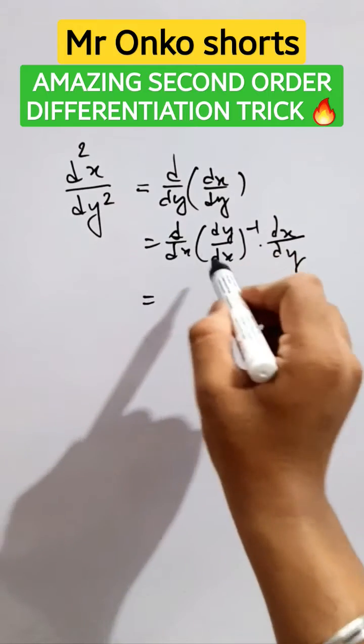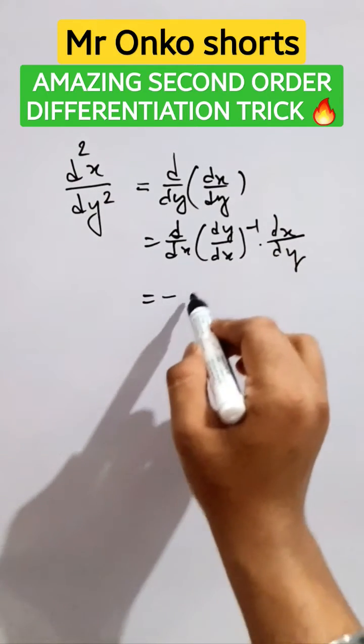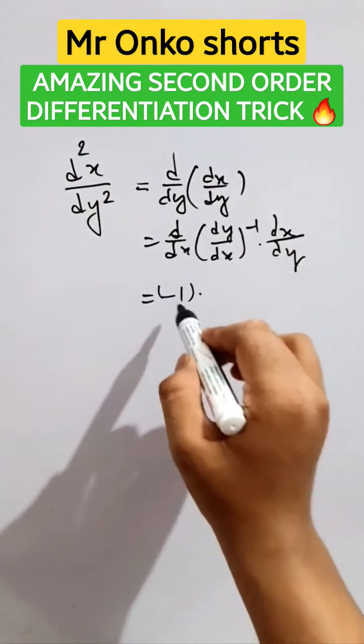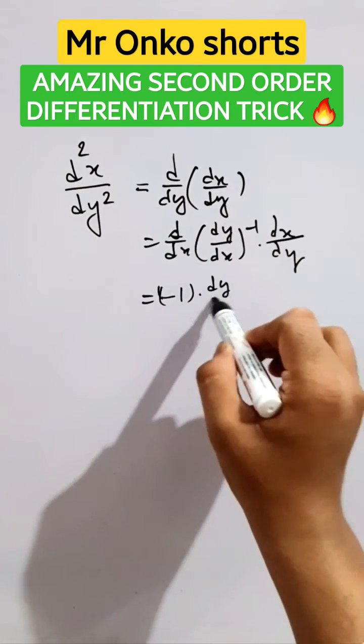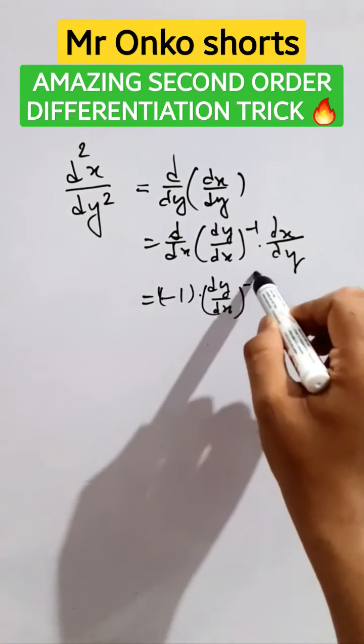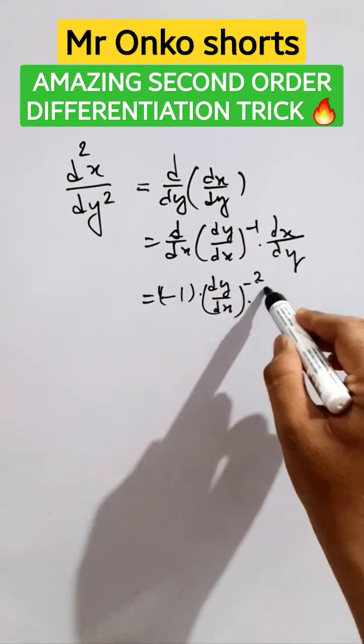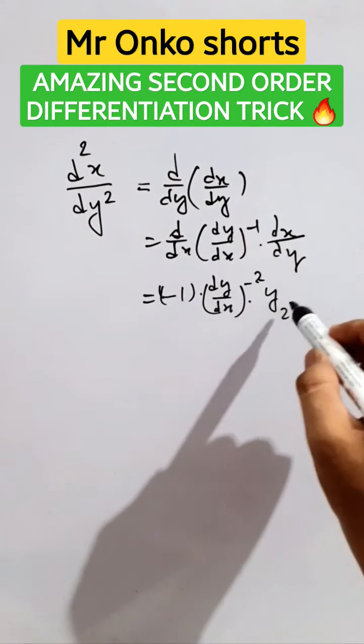Now take derivative with respect to x. It will be minus one into dy/dx raised to the power minus two. Since it's not x, it will be further differentiated with respect to x and it will be y₂, then dx/dy.